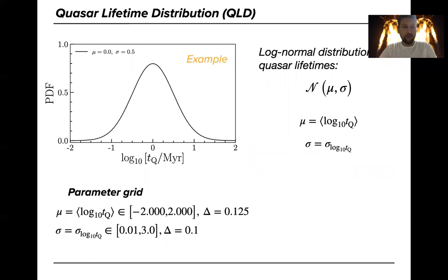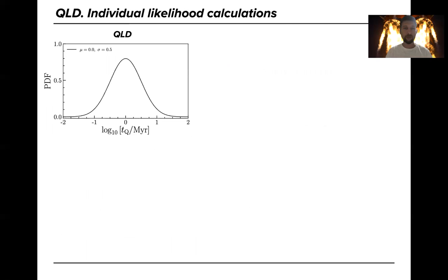So we define the parameter grid which is listed here in the bottom of this panel and now for each combination of these parameters we need to create the Bayesian likelihood in order to run the MCMC analysis later and to infer the mean and sigma of the distribution. So how do we do it?